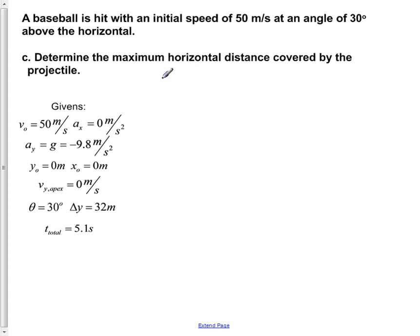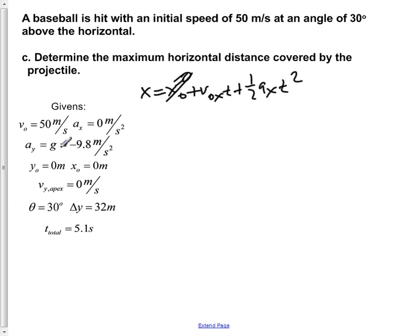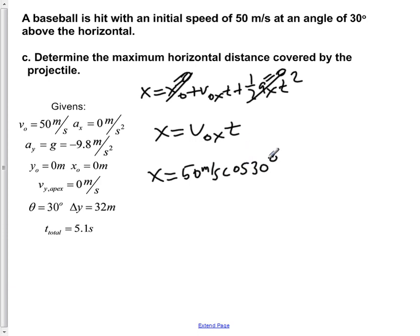Part C says determine the maximum horizontal distance covered by the projectile. We use x = x-naught + v-naught-x·t + ½·a_x·t². Since x-naught = 0 and a_x = 0, both those terms cancel, leaving horizontal range = v-naught-x × t. Plugging in: v-naught-x = 50 × cos(30°), t = 5.1 seconds. The horizontal range is equal to 221 meters.